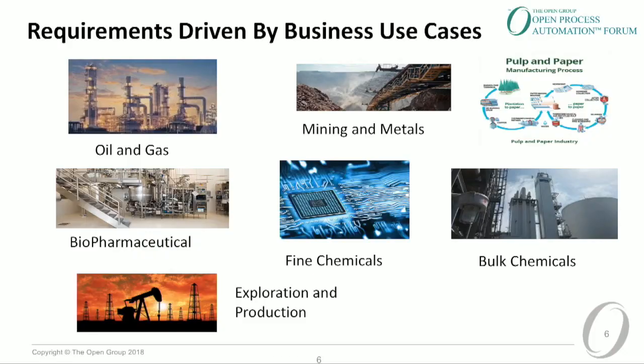We drew from all across the process industries — oil and gas, mining and metals, pulp and paper, bulk chem, fine chemicals, biopharmaceutical, and exploration and production. Common themes emerged across the industry and were distilled into requirements, driven by business use cases and founder statements. I want to thank those in the audience who authored portions of the business guide — thank you for your contribution.